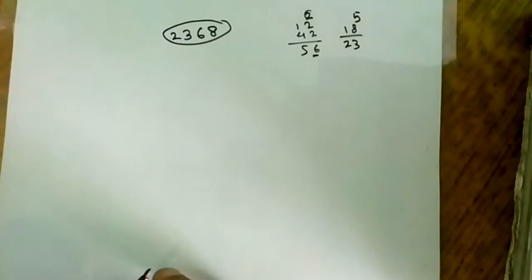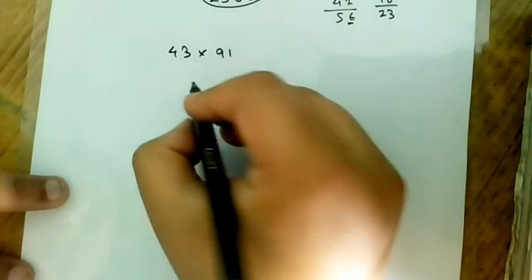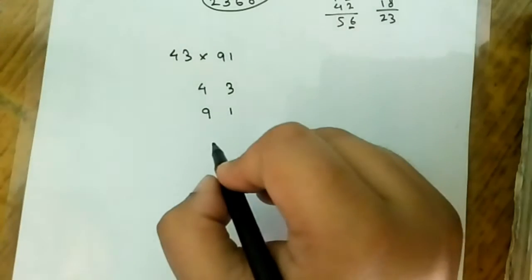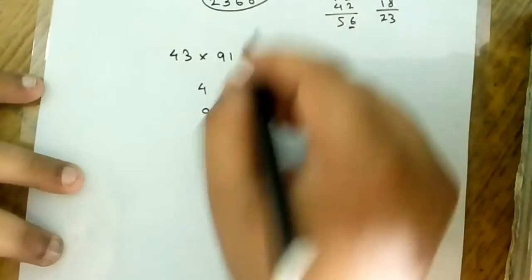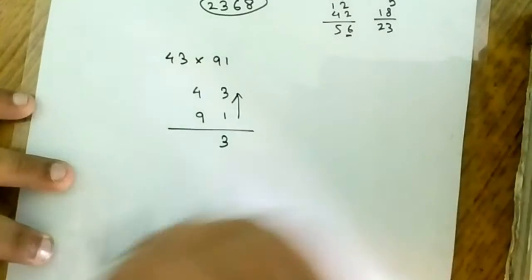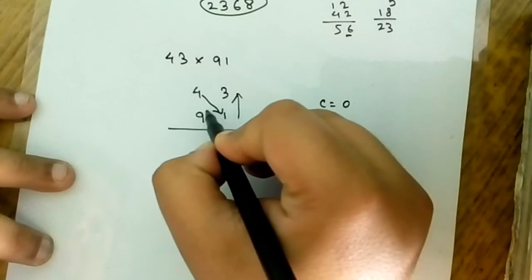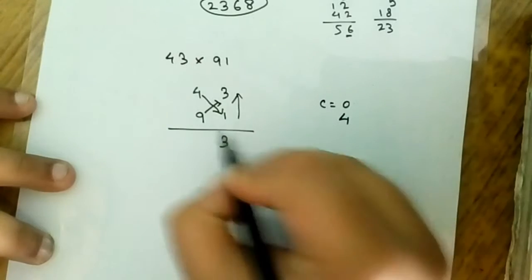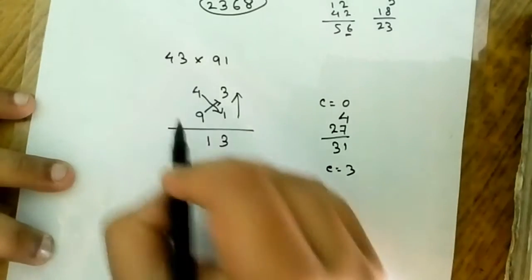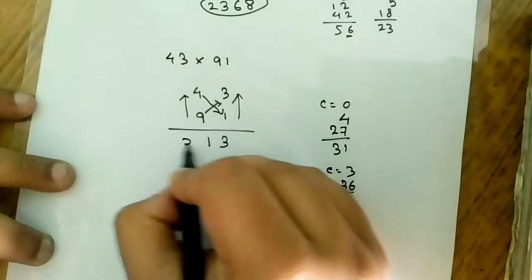Let's try with another number: 43 into 91. The process is very simple, just like the other one. First down to up: 1 into 3 is 3, carry is 0. Now crossword: 4 into 1 and 9 into 3. 4 into 1 is 4, 9 into 3 is 27. 27 plus 4 is 31, put 1, carry is 3. Now again down to up: 9 into 4 is 36, 36 plus 3 is 39. This is the required answer.